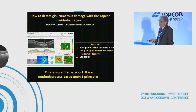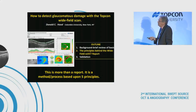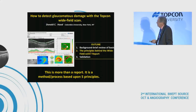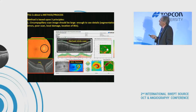This is more than just a report — it's a method or process based on five principles. I'm going to introduce the report while explaining each principle. The first principle is that the circumpapillary scan image should be large enough to see details.